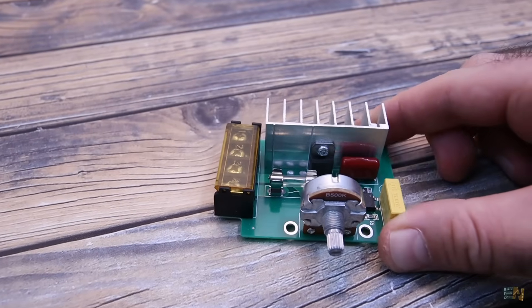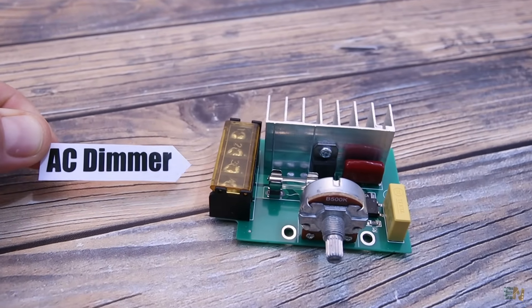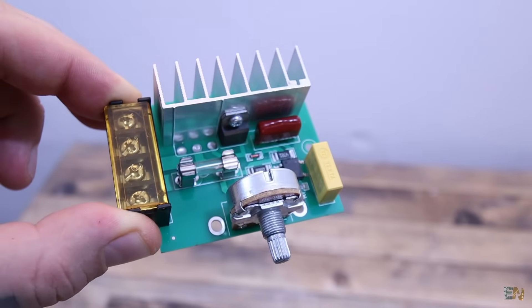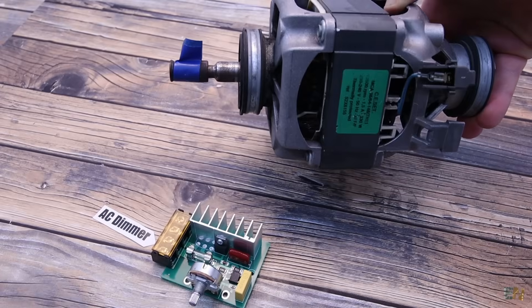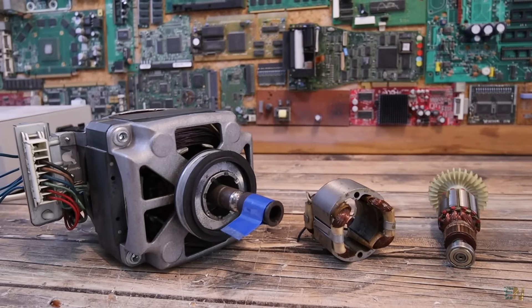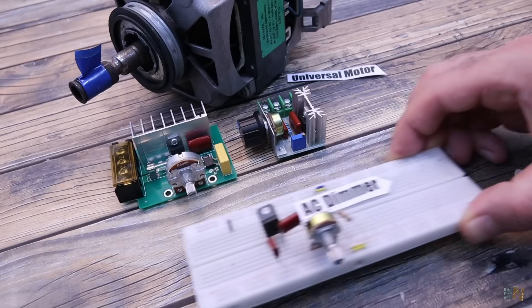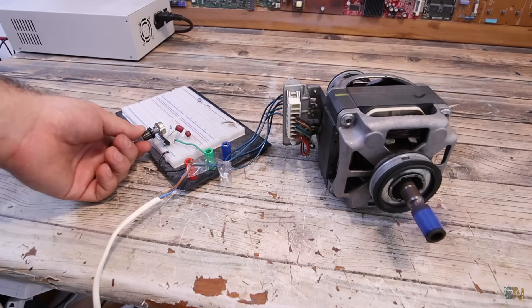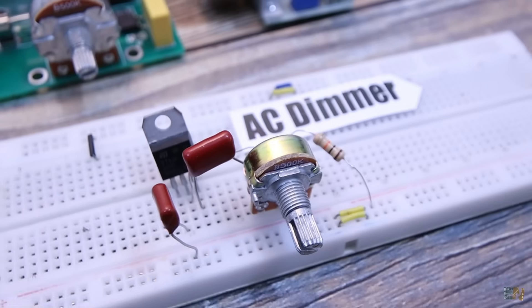This here is a so-called triac dimmer or sometimes called an AC dimmer circuit. A few weeks ago I made a video about the universal motors and showed you how they work internally and how to connect them, but I also showed you a crude circuit for controlling AC power and how to control the speed of that AC motor.